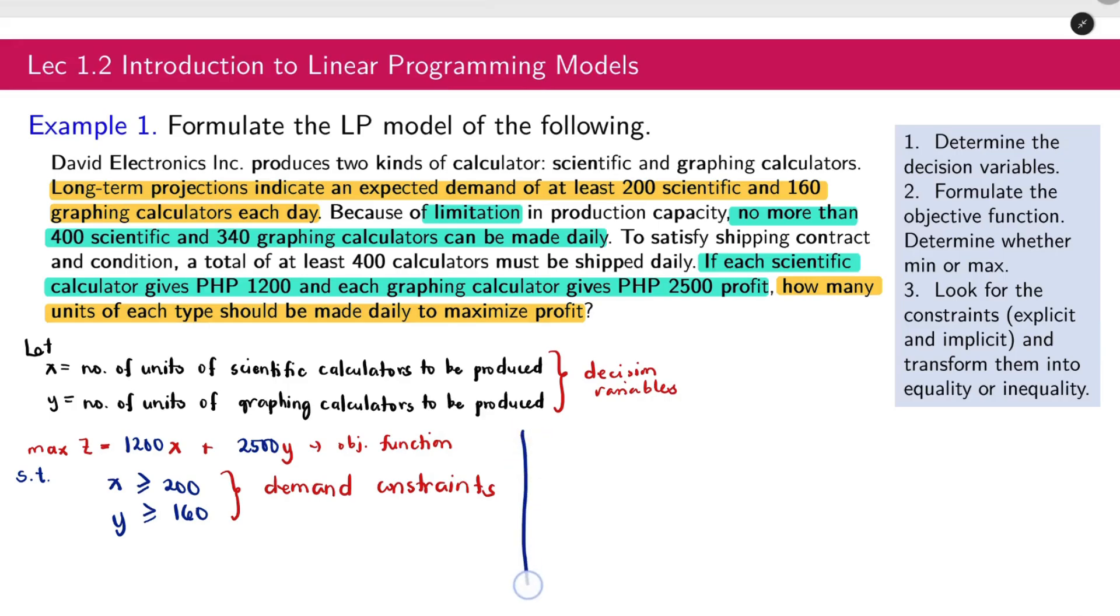That's another constraint. It's one of the conditions that must be satisfied. For this, we have x less than or equal to 400. And then y less than or equal to 340. So this is the production supply constraint.